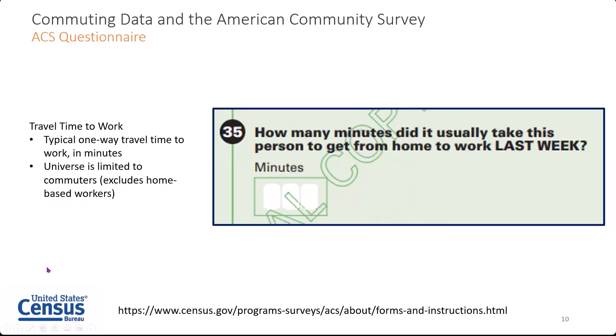Next, we ask all commuters their travel time to work. We simply ask the number of minutes they travel to work — their typical one-way travel time. Again, this universe is limited to commuters; we're excluding home-based workers. We find this to be a pretty helpful broad measure of how commuting burden has changed over time. In some recent data products, we've emphasized how travel time varies by geography — for example, in dense metropolitan areas compared to sparser communities outside major metros. We also usually observe very interesting variation by commuting mode, such as differences among those who bike to work and those who take public transportation.